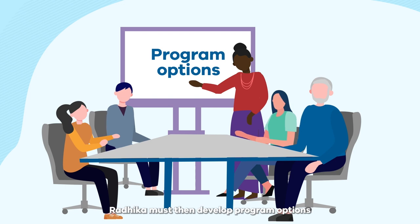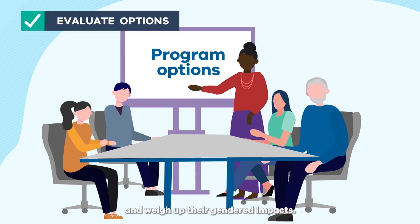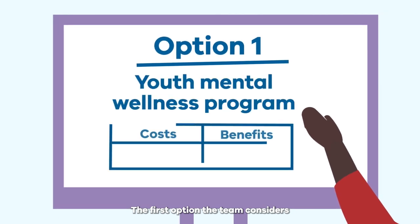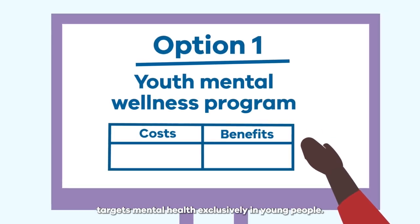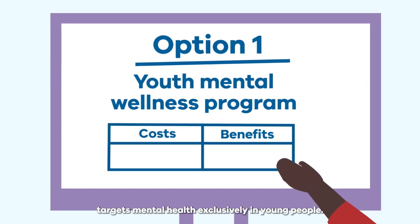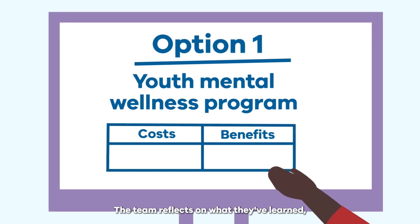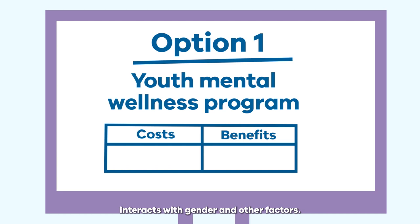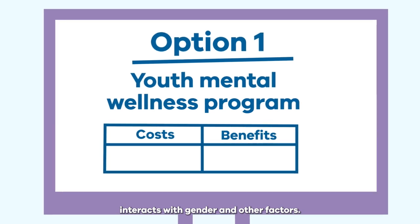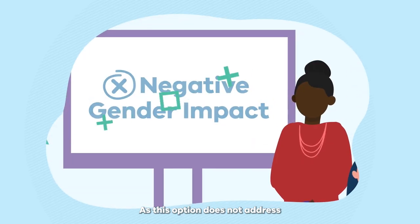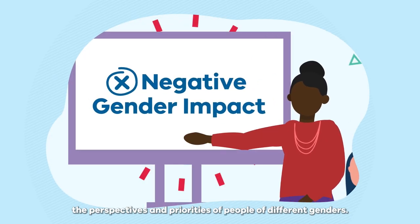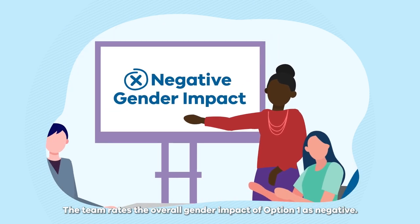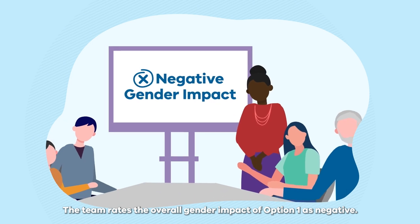Radhika must then develop program options and weigh up their gendered impacts. The first option the team considers targets mental health exclusively in young people. The team reflects on what they've learned, realising this approach does not address how mental health interacts with gender and other factors. As this option does not address the perspectives and priorities of people of different genders, the team rates the overall gender impact of option one as negative.